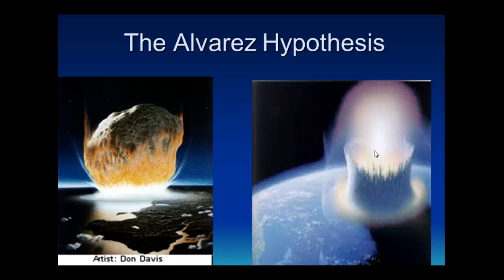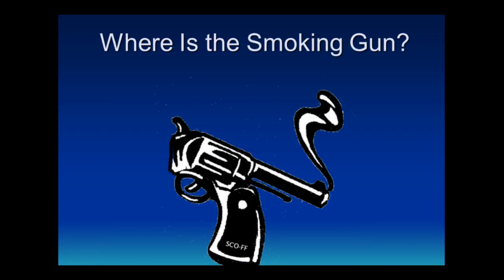Here's the problem: no crater was found. A big object hits, causes a nuclear winter, extinction of all dinosaur species — but no crater. It was assumed that one existed, about 65 million years old and roughly 100 kilometers (65 miles) in diameter. Seems like that would be easy to find, and yet — no crater. Where in the world could that thing be? That's the mystery we'll explore in part three.